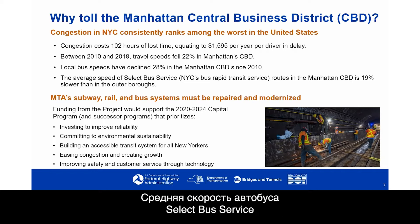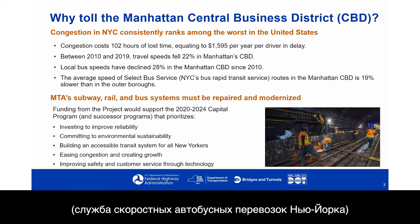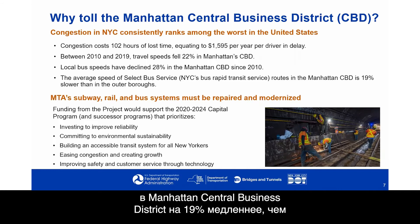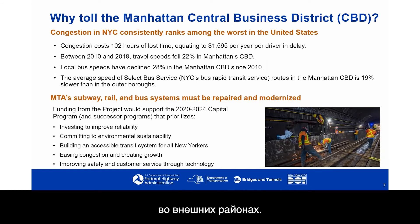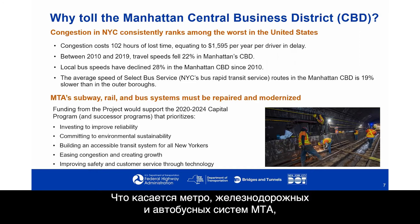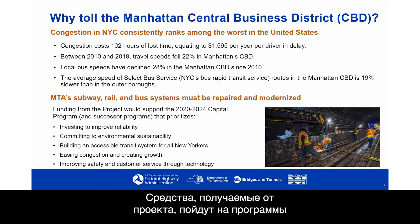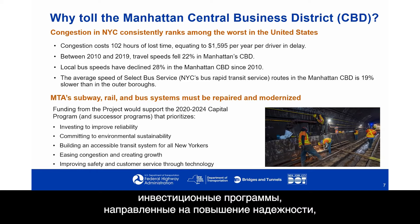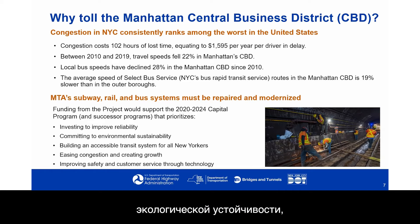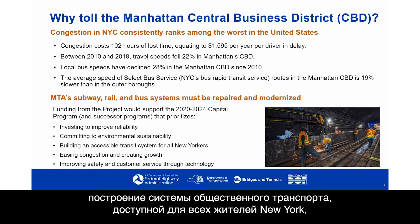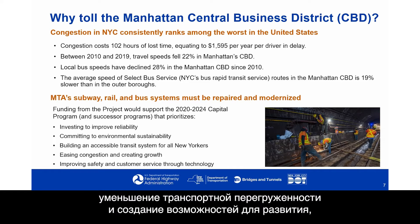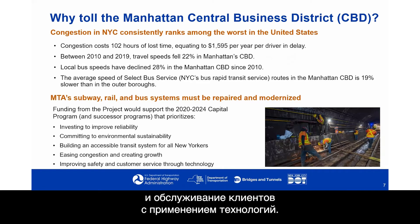The average speed of Select Bus Service — New York City's bus rapid transit routes in the Manhattan CBD — is 19% slower than in the outer boroughs. MTA's subway, rail, and bus systems need to be repaired and modernized. Funding from the project would support the 2020–2024 capital program, prioritizing reliability improvements, environmental sustainability, an accessible transit system, congestion easing, and safety improvements through technology.